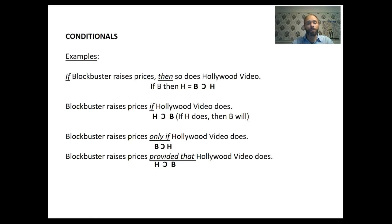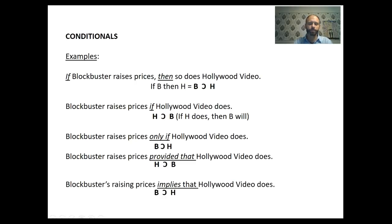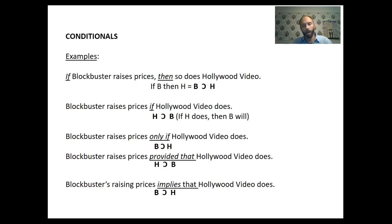Let's look at some other terms that indicate conditional statements. 'Blockbuster raises prices provided that Hollywood Video does.' 'Provided that' is similar to 'if,' so whatever comes after it is the antecedent — giving us H horseshoe B. A different case: 'Blockbuster's raising prices implies that Hollywood Video does.' When you see 'implies that,' you can think of 'only if' or 'then' — what comes after is the consequent. So Blockbuster's raising prices is the antecedent, and we get B horseshoe H.